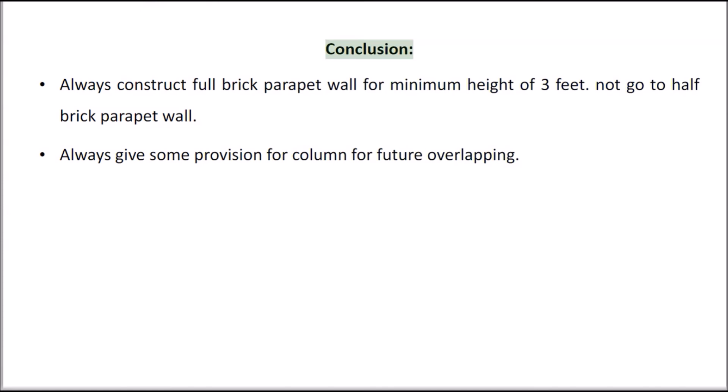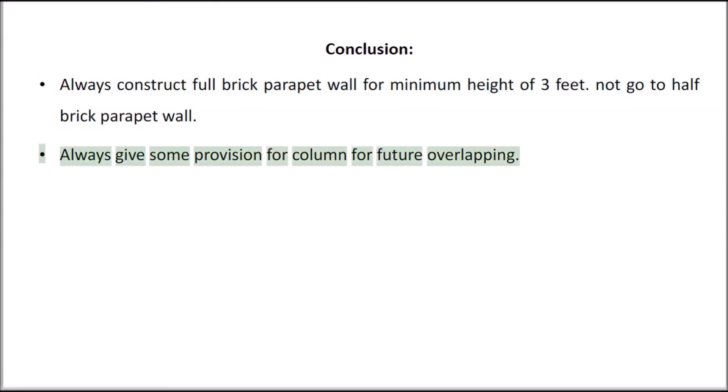Conclusion: Always construct a full brick parapet wall with a minimum height of 3 feet. Do not go for a half brick parapet wall. Always give some provision for the column for future overlapping.